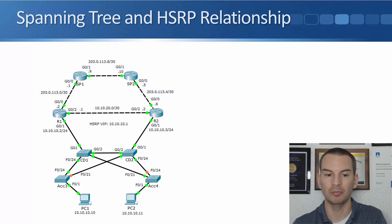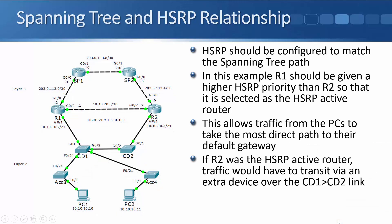In the next slide I've tidied up the diagram a little where I've removed those links which are being blocked. At layer 2, my spanning tree configuration has traffic going north and southbound via CD1 right now. I want my HSRP configuration to match the spanning tree path. So in this example R1 should be given a higher HSRP priority than R2 so that it is selected as the HSRP active router. That allows traffic from the PCs to take the most direct path to their default gateway. If R2 was the HSRP active router, traffic would have to transit via an extra device over the CD1 to CD2 link.